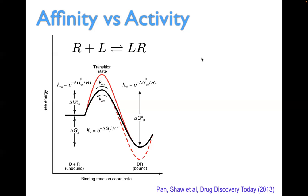However, when we do structure-based drug discovery, most of the time what we optimize is ligand affinity. A very important question is: what is the relationship between affinity and activity? In terms of affinity determinations — both experimental and computational — the goal is evaluating what we call a KD, the dissociation constant. Given a receptor plus a ligand combining to form a complex LR, this is a chemical equilibrium where on the left-hand side the ligand is unbound and on the right-hand side the ligand is bound.